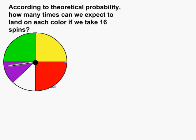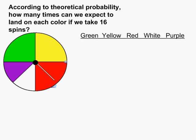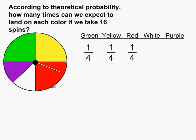Let's examine the green, yellow, and red sections because they are equal in size. We can clearly see that each of these three colors occupies one quarter of the space of the entire spinner. Therefore, the probability of each of these colors being landed on is one fourth, or one chance out of every four spins.